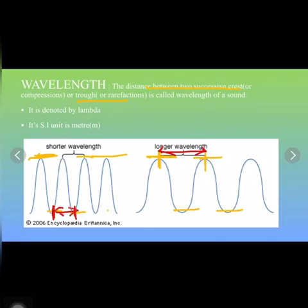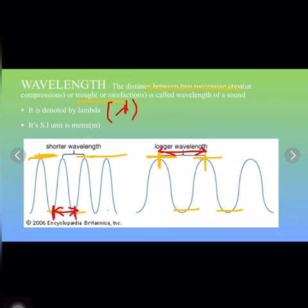Wavelength is denoted by the Greek letter lambda — written as an upside-down Y symbol — and read as 'lambda.' Since wavelength is a distance, its SI unit is meter.